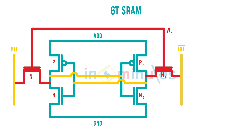Now, for the read operation we followed two basic steps. First, we made our word line (WL) high, equal to VDD. When that happened, N3 and N4 transistors turned on. Next, with the help of our pre-charge circuit, we made bit and bit-bar equal to VDD.